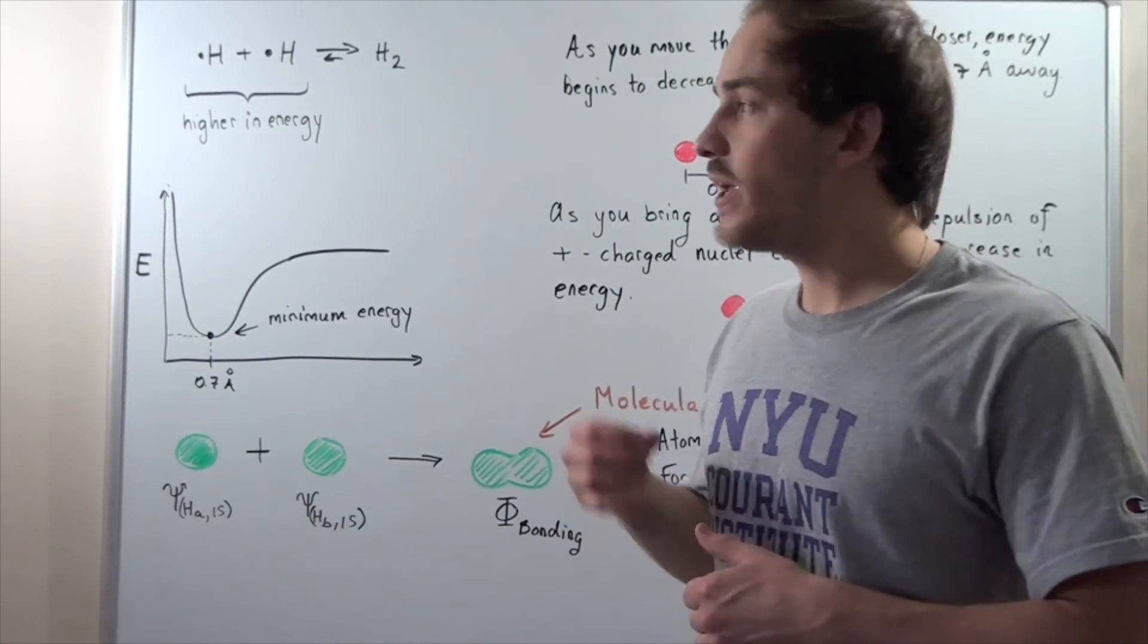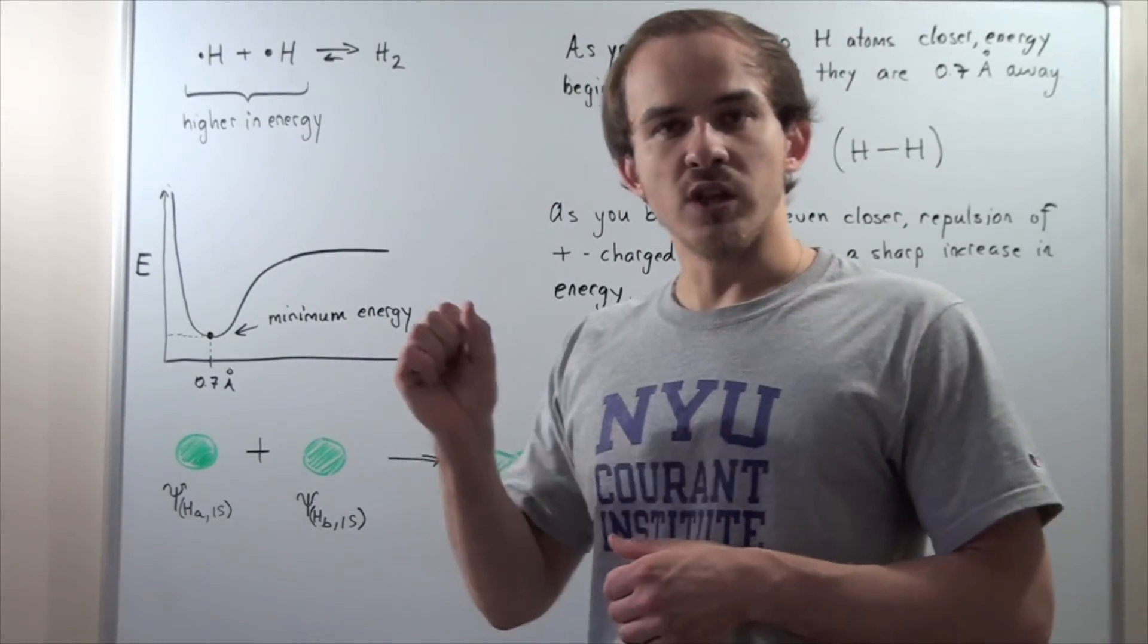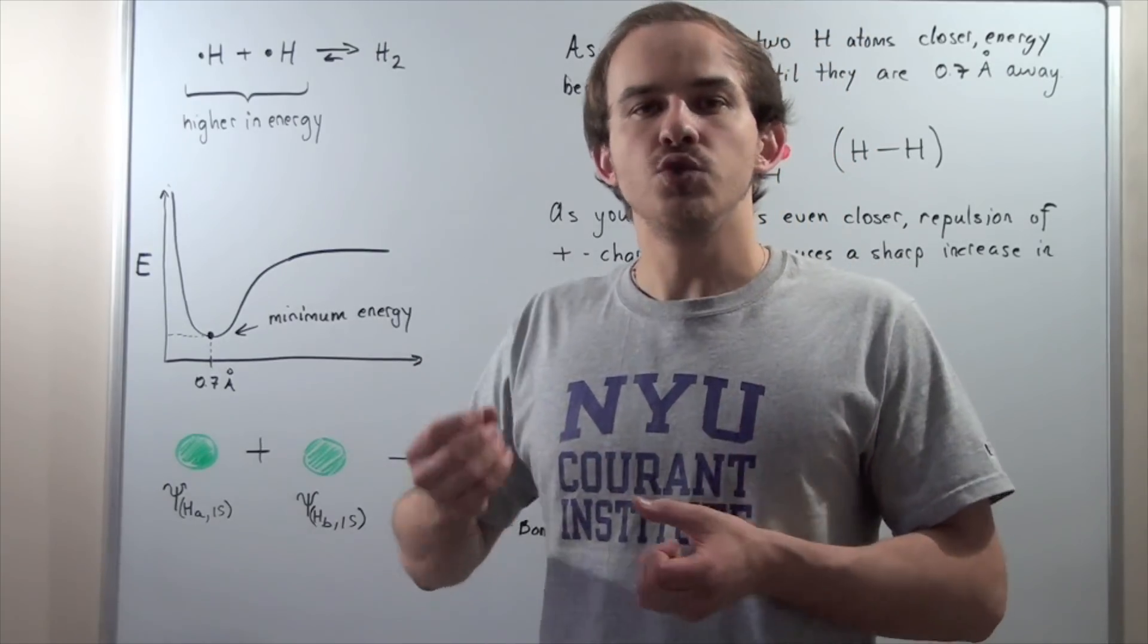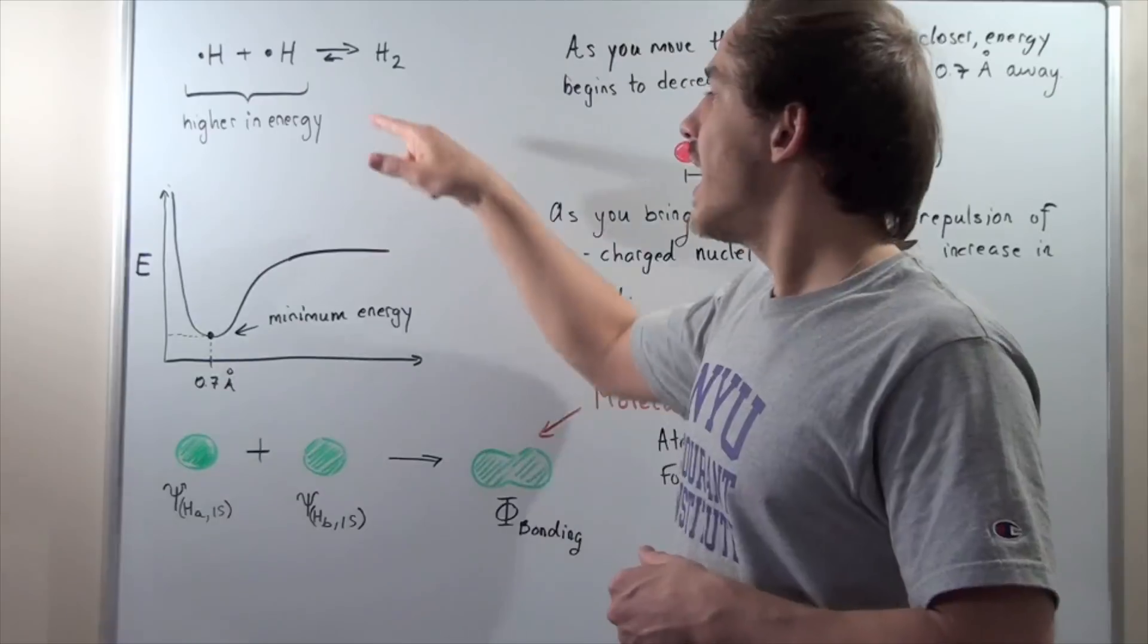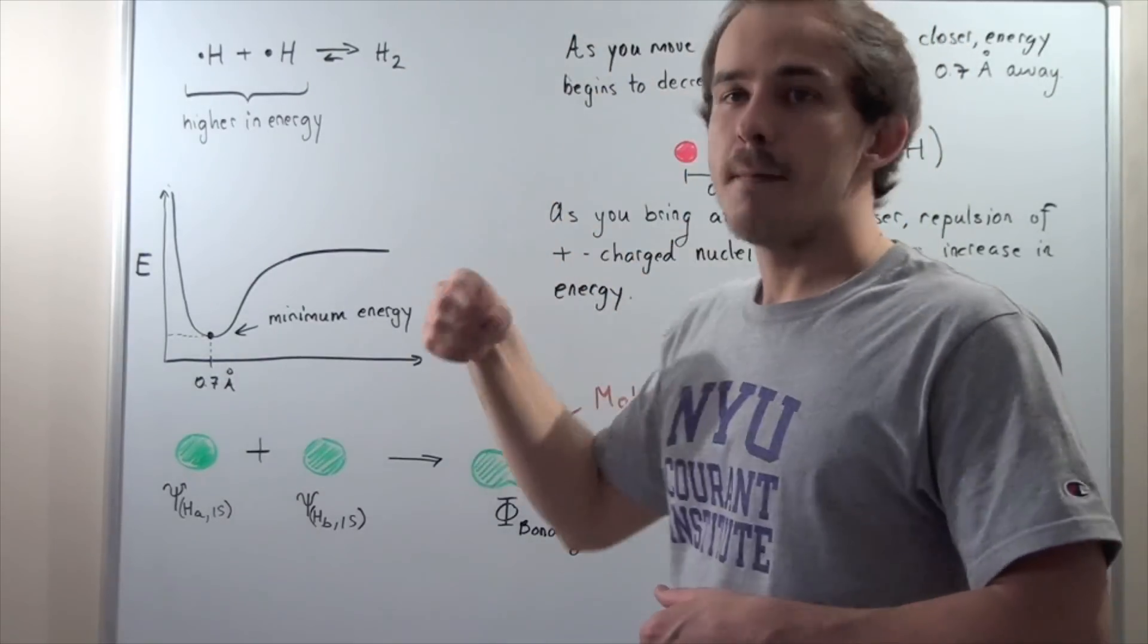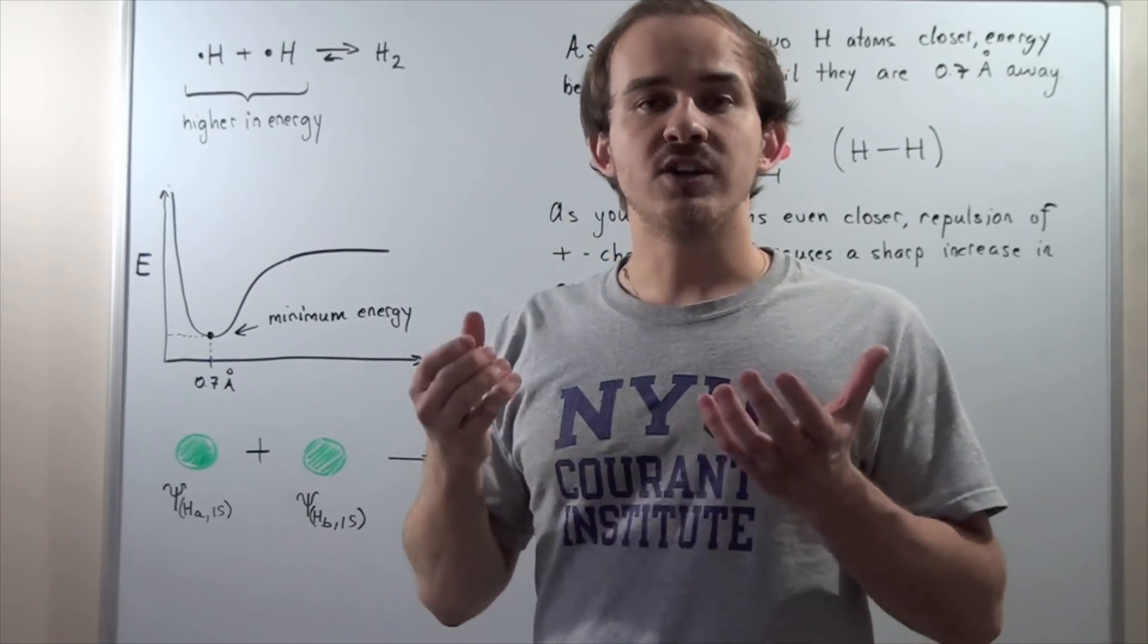Let's begin with the following simple example. Let's say we want to combine two neutral H atoms in a way to form a diatomic H2 molecule. We want to form a covalent bond.